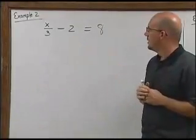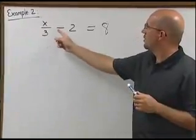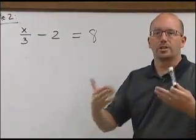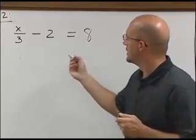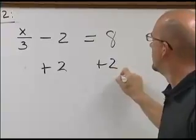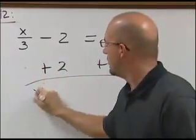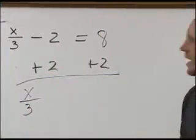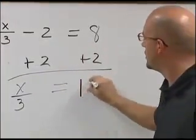Example two has our variable x divided by 3 and also subtracting 2 from it. Remembering we are working in the reverse order of operations, the first thing we will do is add 2 to both sides. That undoes our subtraction. That leaves me with x over 3 as the only thing left on the left hand side, equaling of course 8 plus the 2, which is 10.